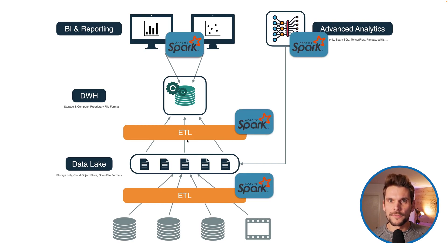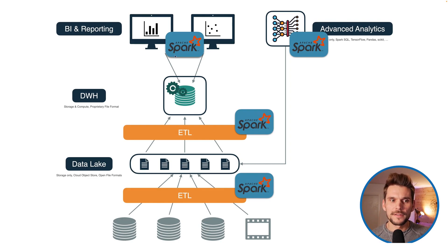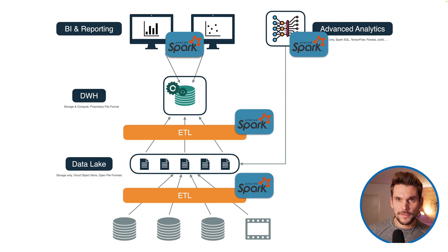Let's look at the role of Spark in this architecture. As you can see, it's appearing basically everywhere on this small chart here. We use it for ETL pipelines into the data lake, ETL pipelines into the data warehouse, and also for business intelligence and reporting use cases by accessing the data warehouse or the data lake. And also advanced analytics use cases, whether for pre-processing data for machine learning or to build machine learning use cases themselves.